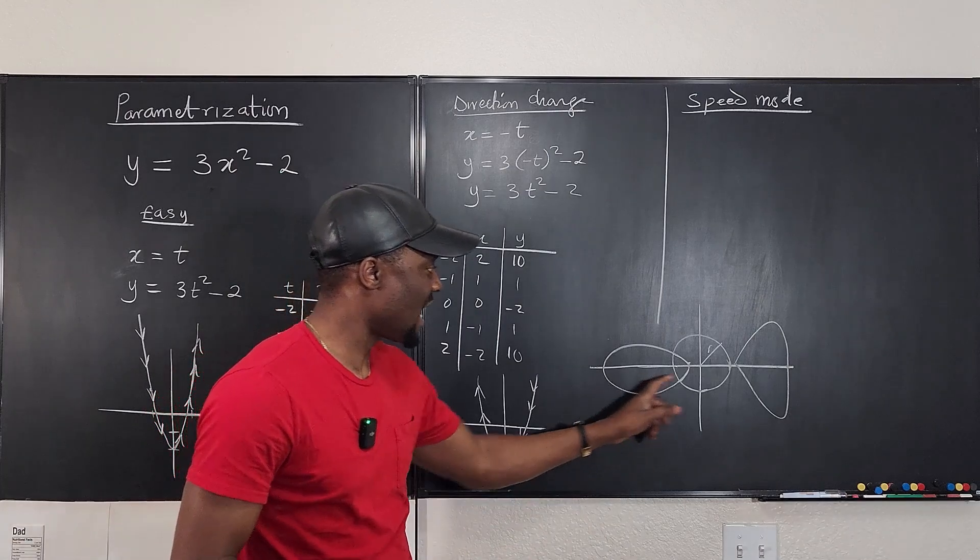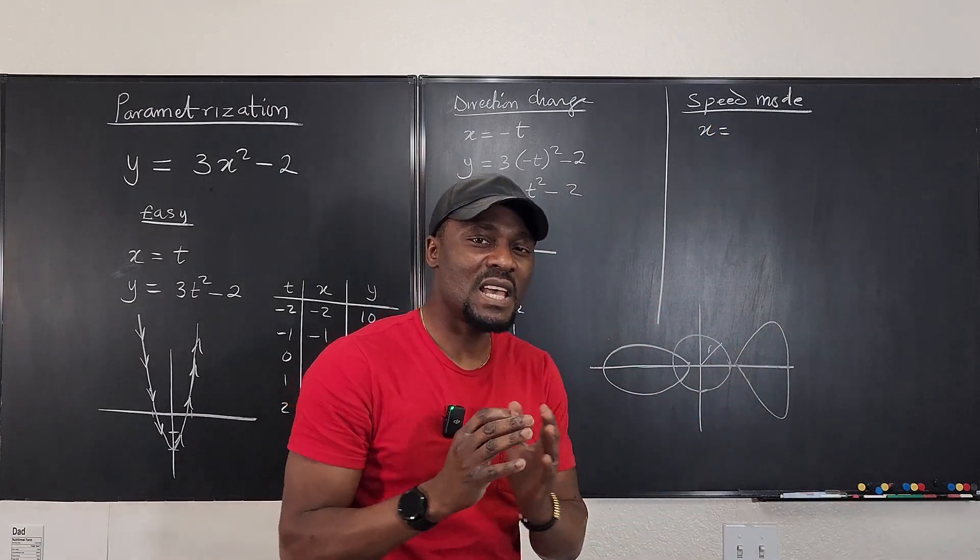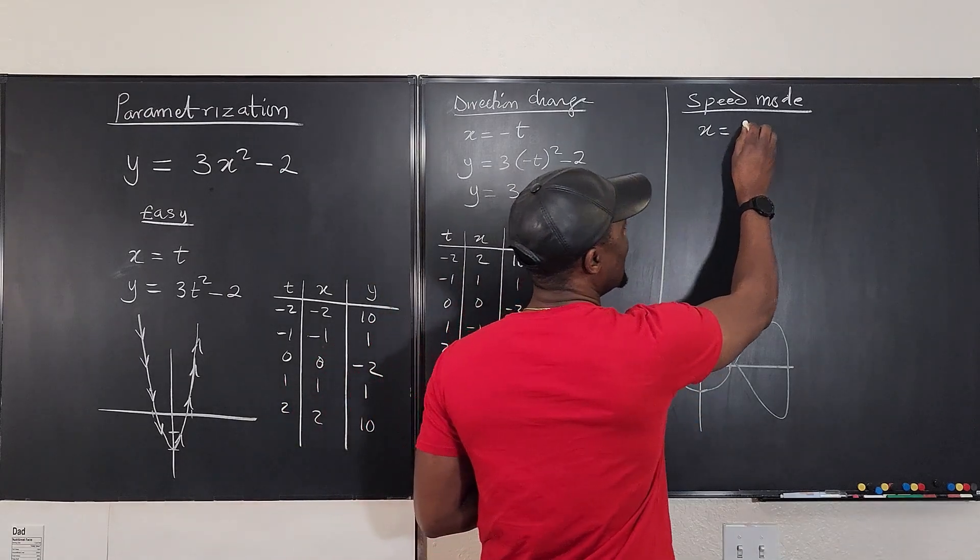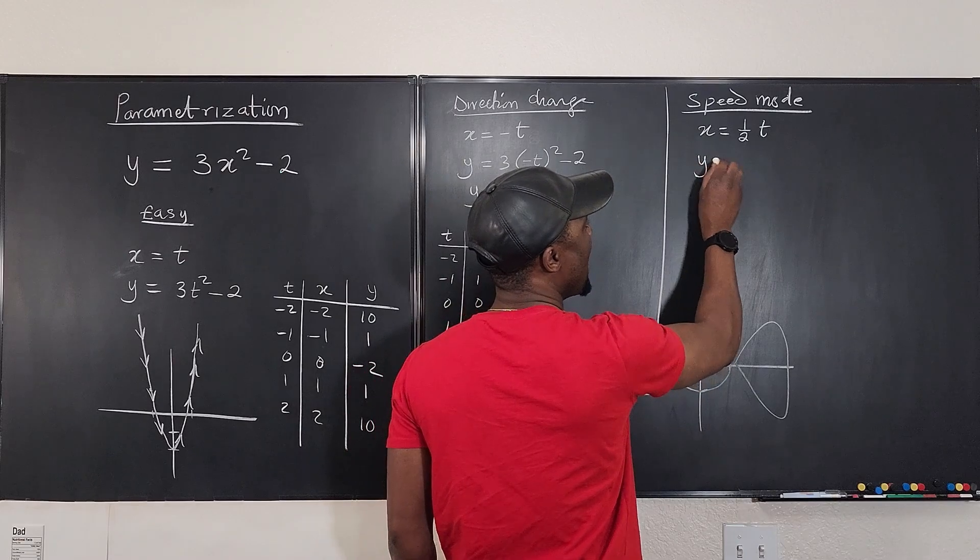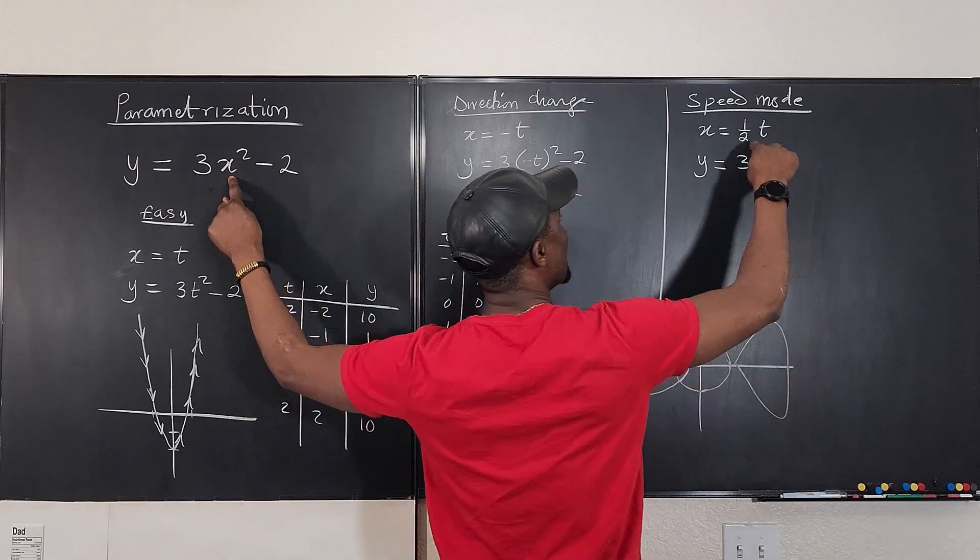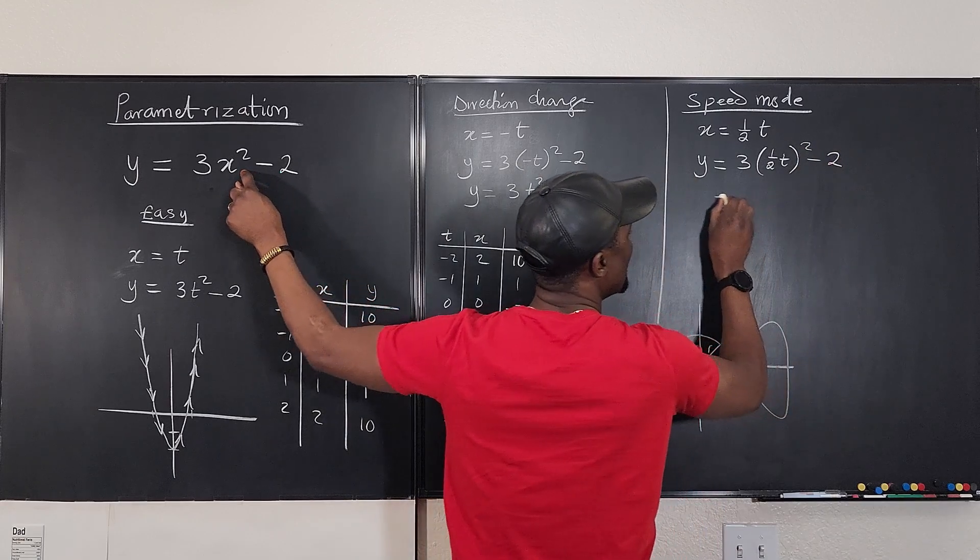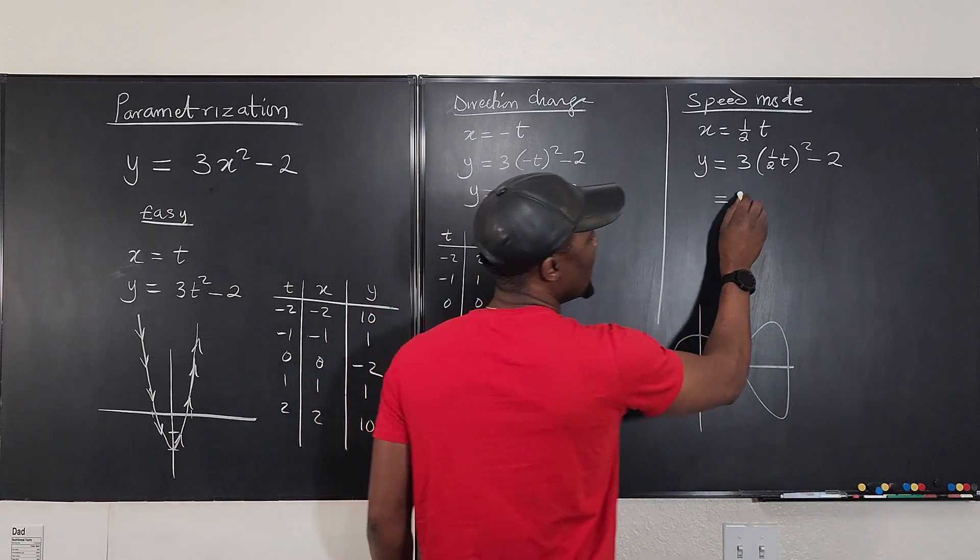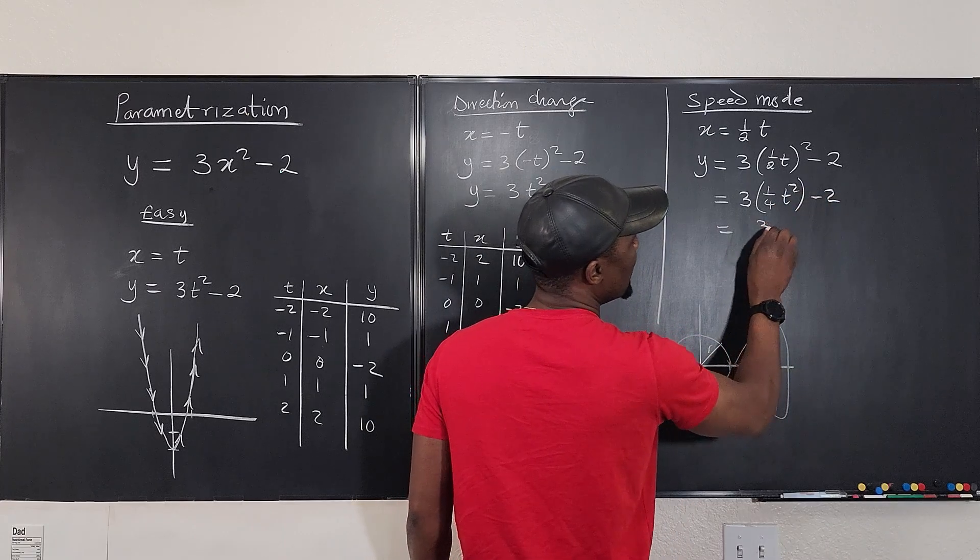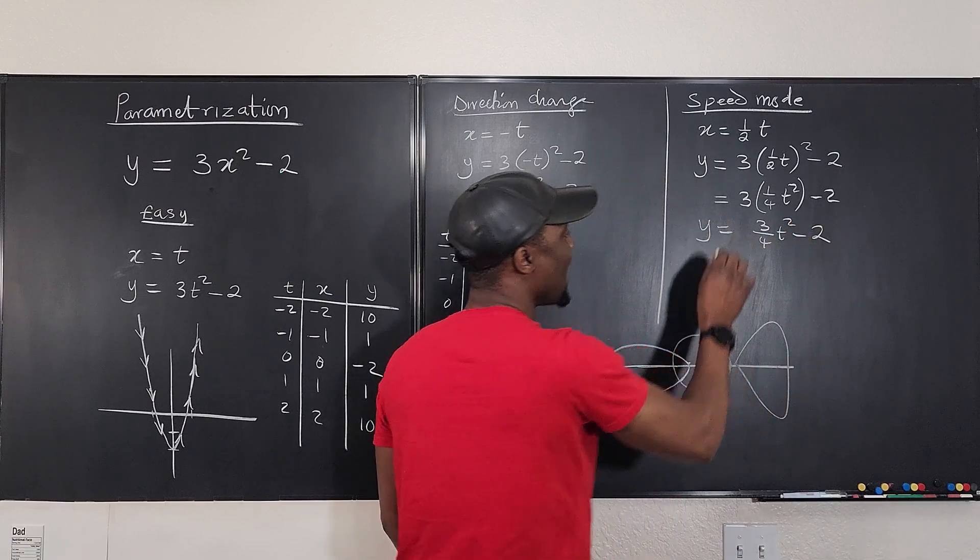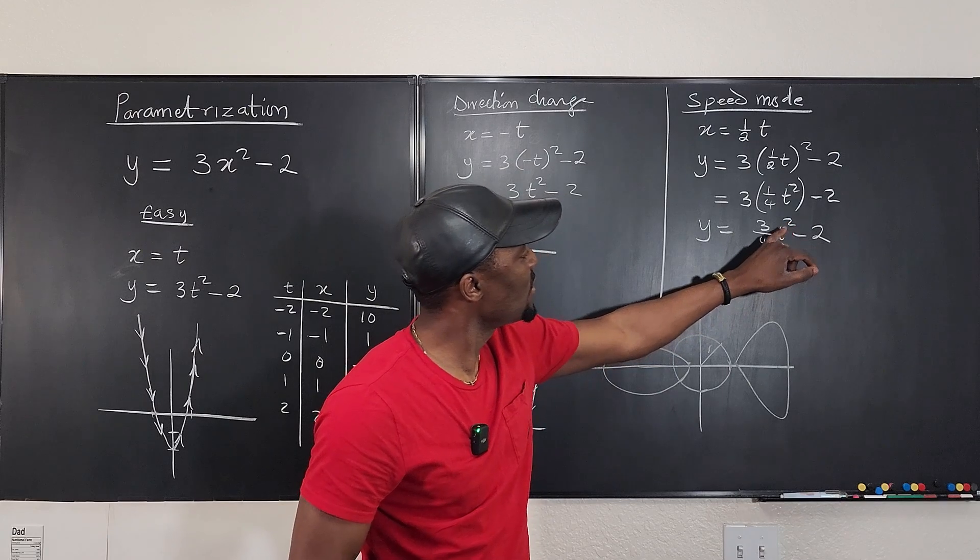So if you want to be as fast as possible in sketching the curve, maybe this curve you don't know what it's going to be like, so what you do is you're going to say x is equal to, make t as small as possible. Let's say x is one half of t. So if x is one half of t, then you're going to compute y to be equal to 3 times one half of t squared minus 2. This is going to give you 3 times 1 over 4 t squared minus 2, that's equal to 3 over 4 t squared minus 2.